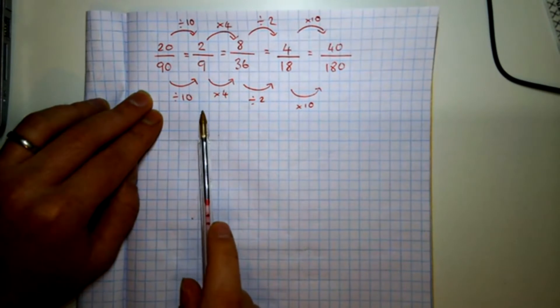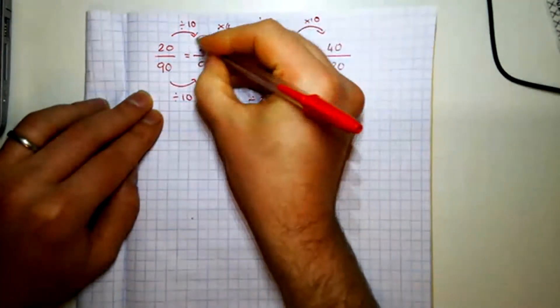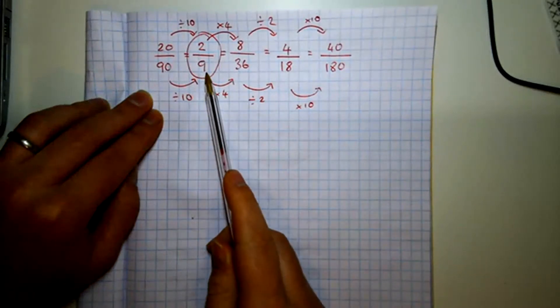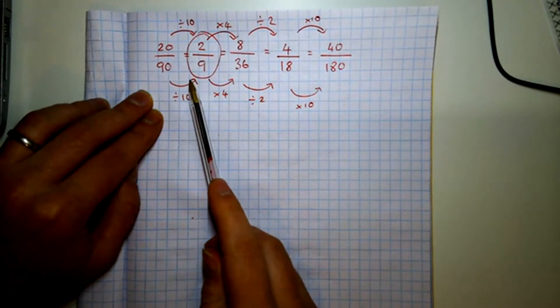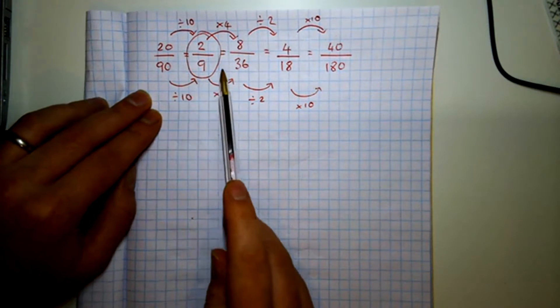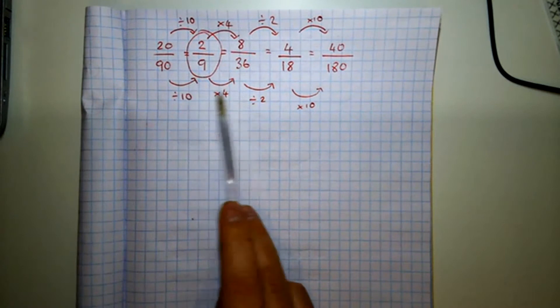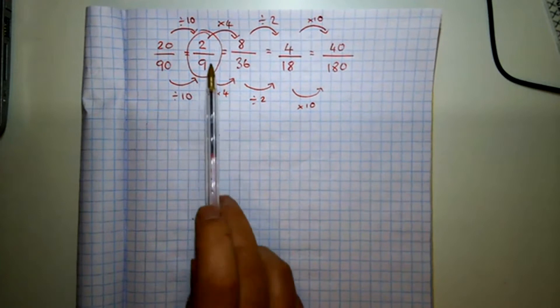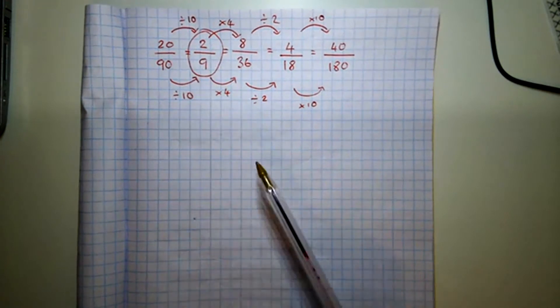And the other important thing is that this one here, this 2 over 9, that is what's called simplest terms. If you have to simplify a fraction fully or find a fraction in its simplest terms or write a fraction in its simplest terms, then it's basically asking you what's the smallest numbers we can get. We can't go into decimals and things. We can't halve it and get 1 over 4.5. Because there's no common factors between 2 and 9, that's as simple as it gets.